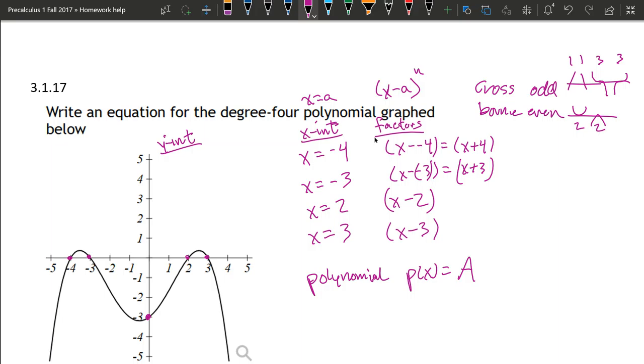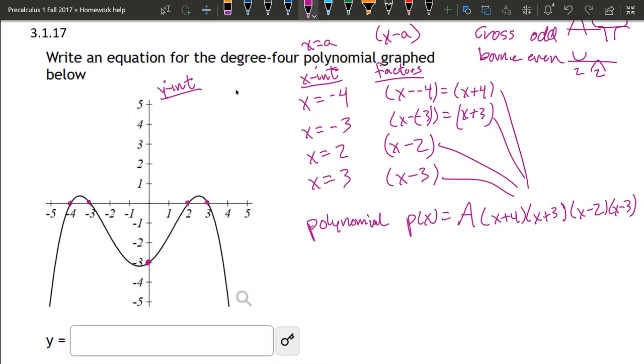So our polynomial will write as p of x. Now there can be one hidden factor, one constant factor. I'll use the letter a. And we're going to write our factors here. So 1, 2, 3, 4, we're going to write them all multiplied here. We'll start at the top: x plus 4, x plus 3, x minus 2, x minus 3. These are also the first power, so you don't have to write that in. Okay, what about that y-intercept?